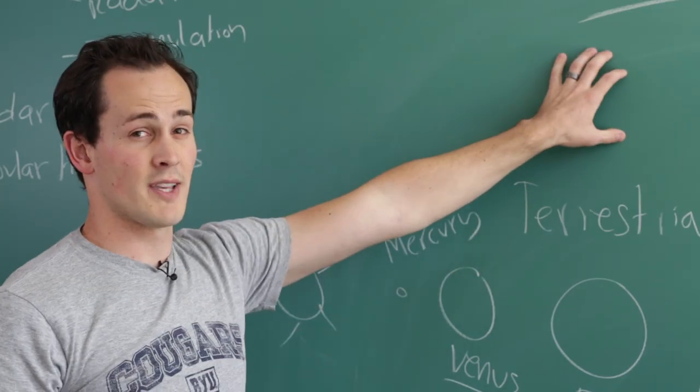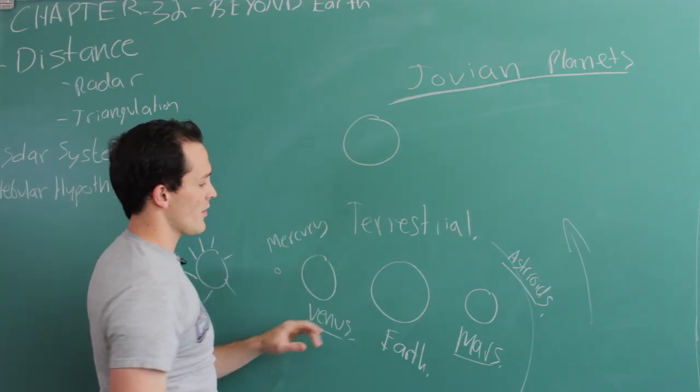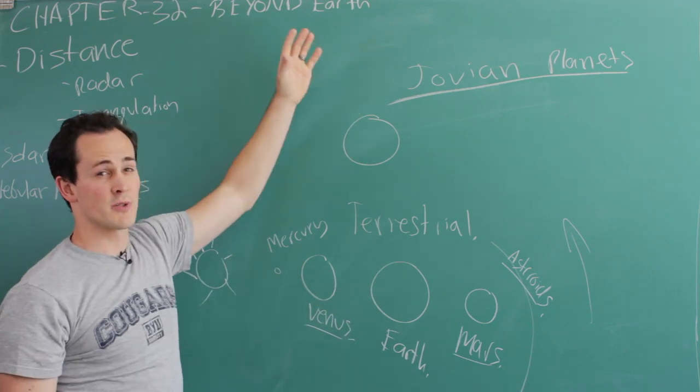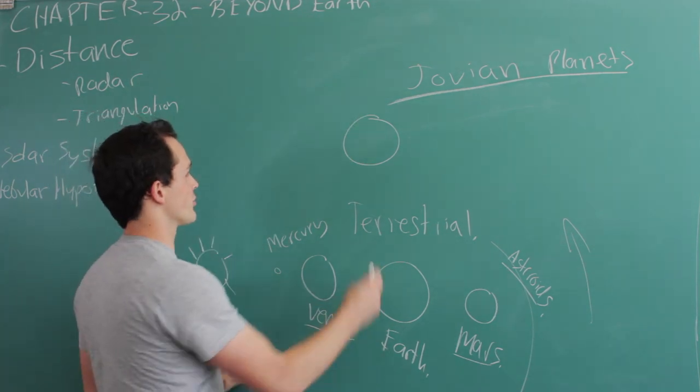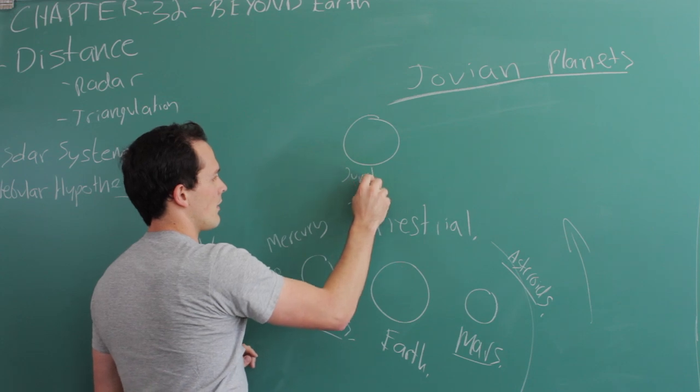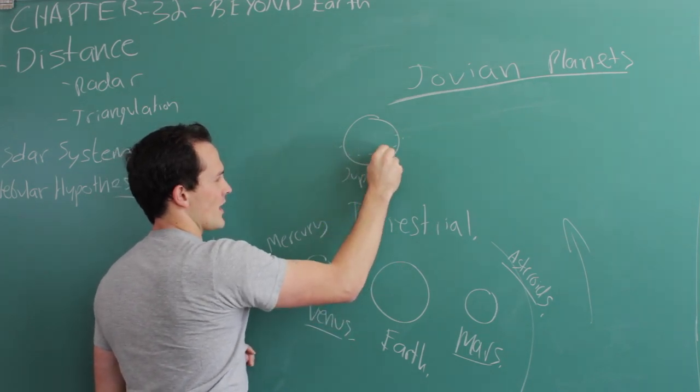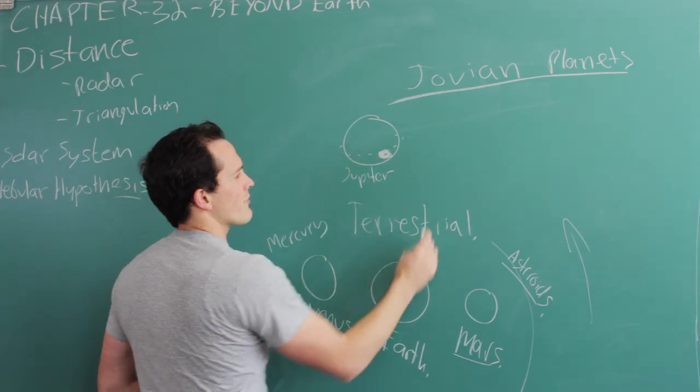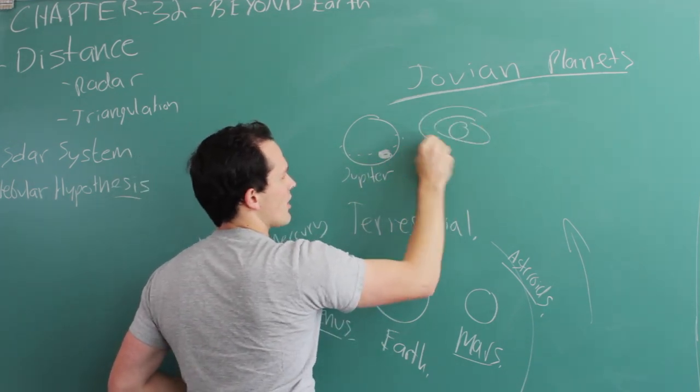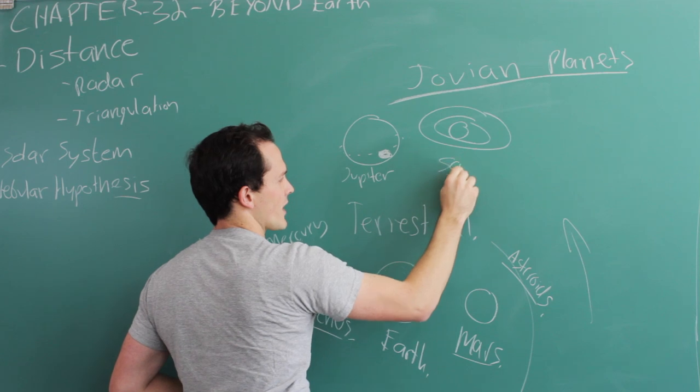The Jovian planets start with our big gaseous one, Jupiter. These are not to scale. Jupiter would be absolutely enormous. Tons and tons of Earths could fit inside Jupiter. Jupiter has a slight ring system as well as the giant red spot. Farther out from Jupiter is Saturn. Saturn also has a ring system that is much more pronounced.